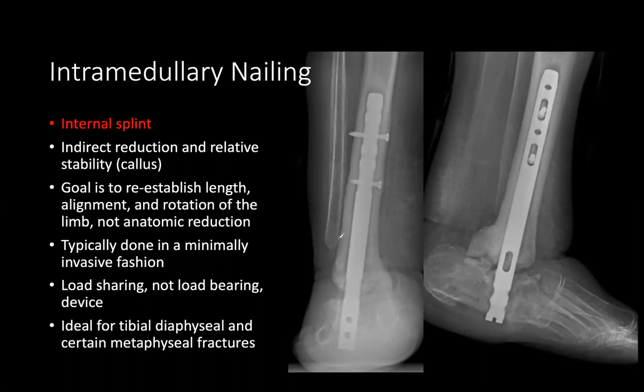Intramedullary nailing — both through the knee and through the heel — aims to achieve relative stability with indirect reduction.